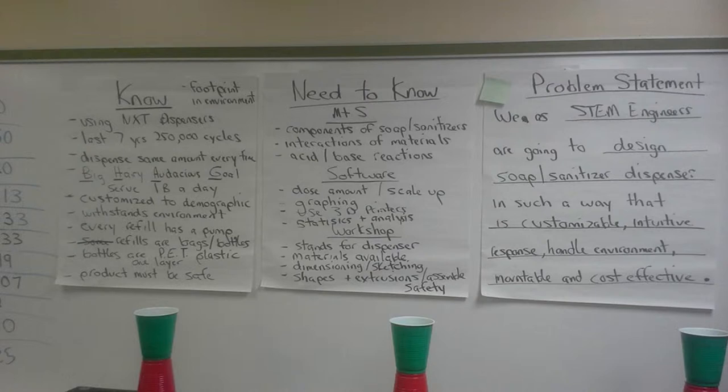At this school we use a PBL process — problem-based learning — in which the kids come in and watch a video of a Holocaust survivor. From there they talked with us about what they knew and what they needed to know. In my class, for example, they needed to learn how to build a flashlight. We had three parts of our class: math and science, software, and workshop, so they had to decide what they needed to learn in each area and come up with constraints for making the flashlight — how big it had to be, how well it had to work. We then went through a couple-week process where the kids learned what they needed to know.